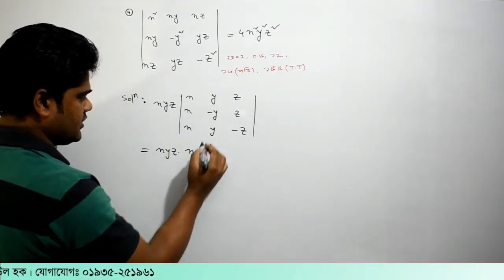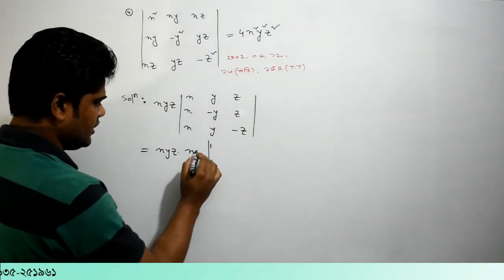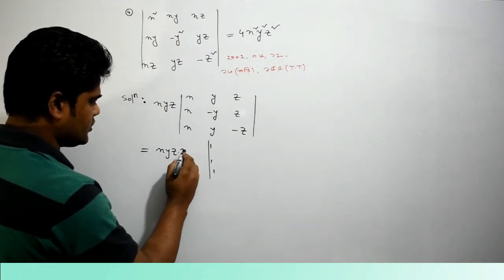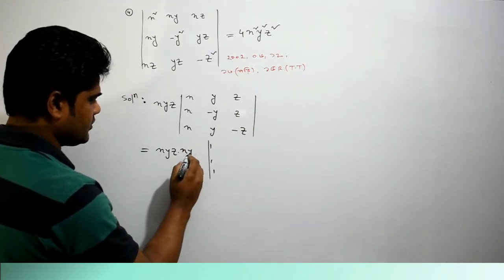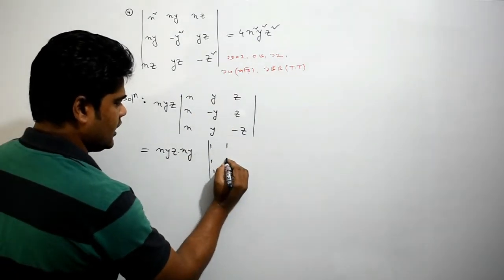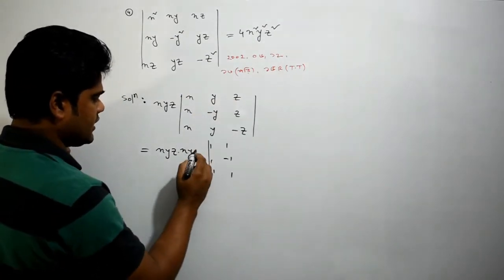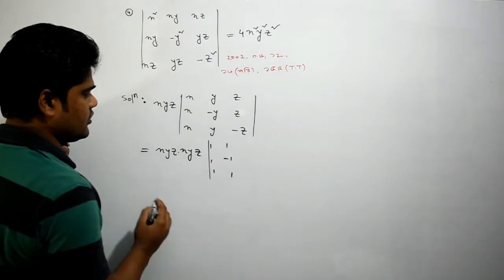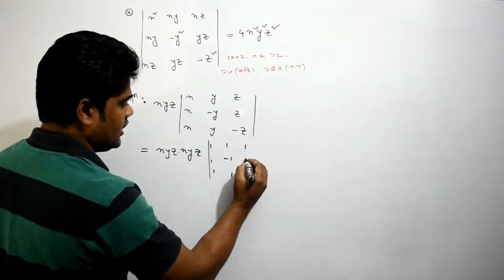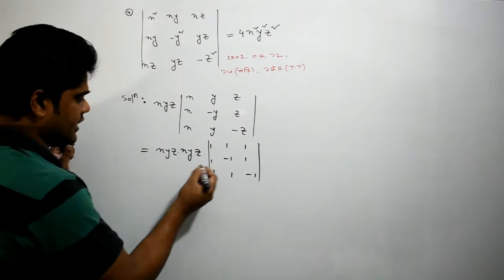Then we have x-y, then y. Then we have x-y, 1-1, and continuing the pattern: 1-1, 1-1, 1-1.